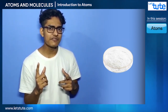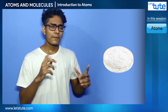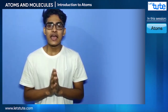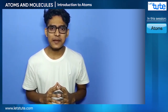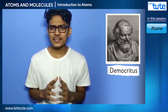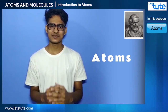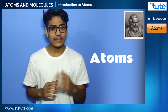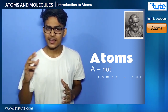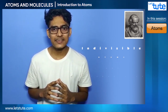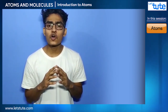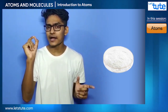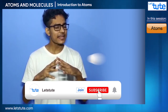So now we know why we were not able to divide these chalk particles further. A Greek philosopher named Democritus, in 600 BC, named these particles as atoms. The word 'atom' is derived from the Greek word 'atomus', where 'a' means 'not' and 'tomus' means 'cut' — meaning atomus is indivisible. So atoms are the smallest particle, and atoms are indivisible.